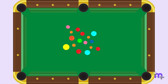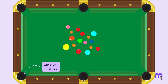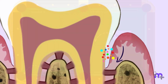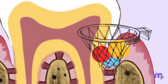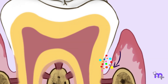Imagine pocket billiards with 6 openings. Consider the openings as the gingival sulcus and the pool balls as the bacteria. Over time, the depth of the openings increases due to constant hitting from the pool balls. This leads to further accommodation of pool balls, i.e. the bacteria, which continue to increase the depth further.